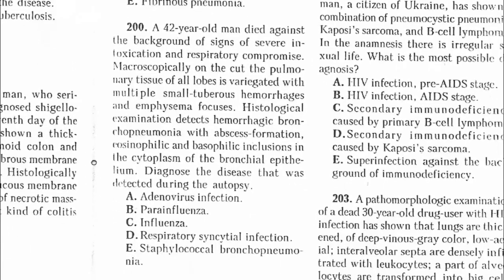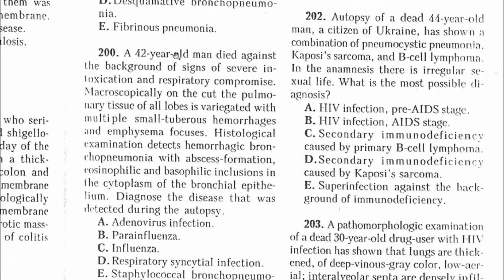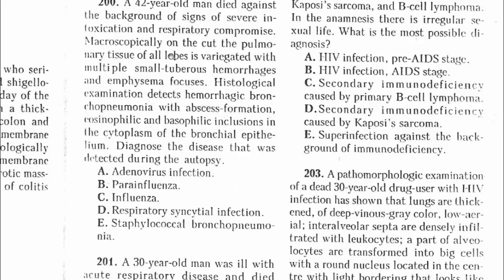Question 200: A 42-year-old man died with signs of severe intoxication and respiratory compromise. Microscopically, pulmonary tissue of all lobes is variegated with multiple small tuberous hemorrhages and emphysema foci; ulcerative and hemorrhagic bronchopneumonia with abscess formation; eosinophilic and basophilic inclusions in the cytoplasm of the bronchial epithelium are noted. This is talking about influenza.